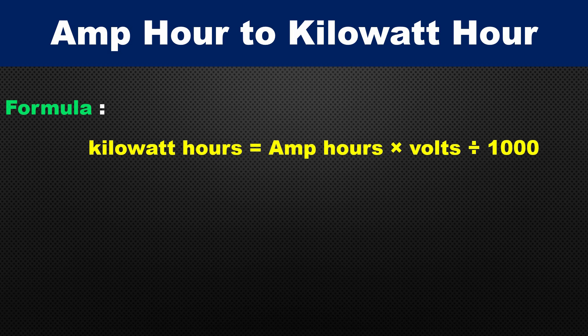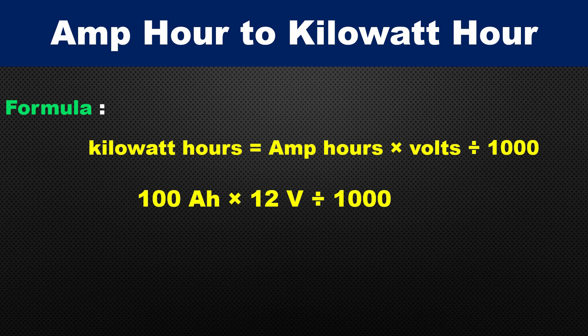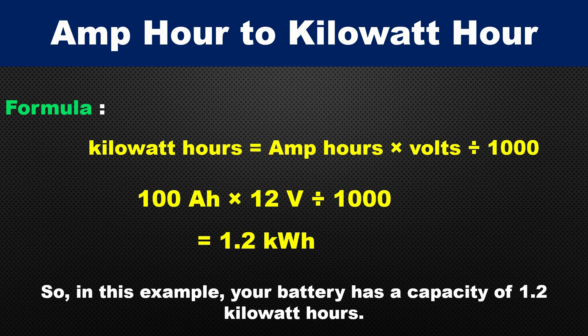So now we put the values into the formula: 100 AH multiplied by 12 volts, divided by 1000. The answer is 1.2 kilowatt-hours. So in this example, your battery has a capacity of 1.2 kilowatt-hours.